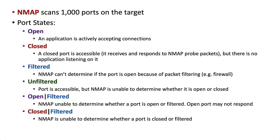The most obvious port states are open and closed, which tells you whether there is a service actively running behind that port. Sometimes nmap can determine if a port is open because traffic is filtered by a firewall. If the port is accessible but nmap can't determine whether it's open or closed, you get unfiltered. When there is more uncertainty, you might get a combination result like open|filtered or closed|filtered.